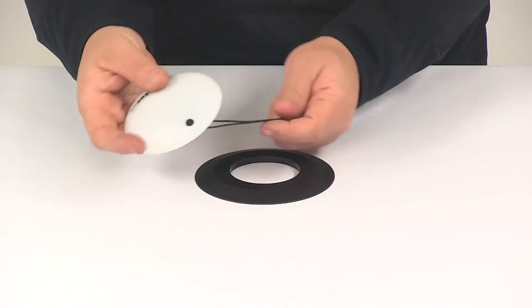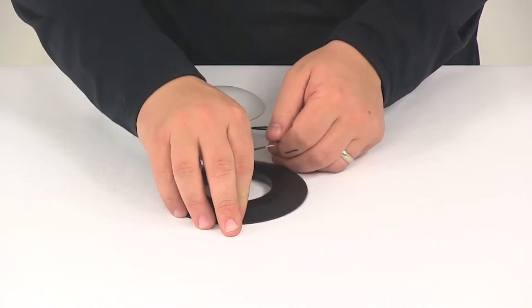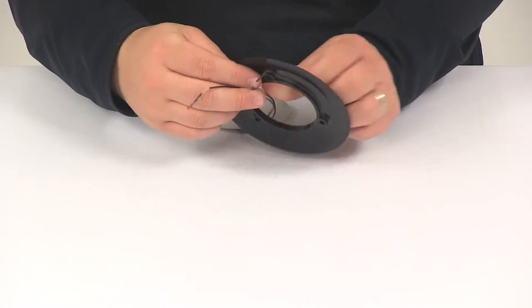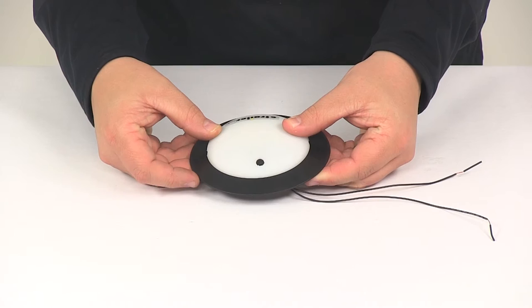And so what you would do is the light is actually going to sit on top of the trim ring, so the wiring goes through the large center area, and then that Puck light sits directly on top of the trim ring.